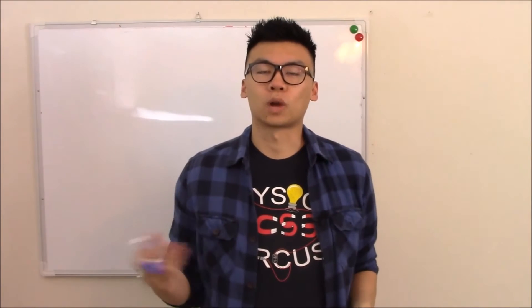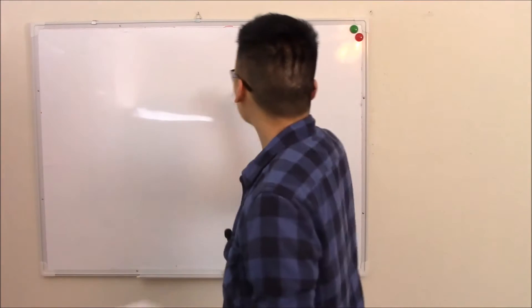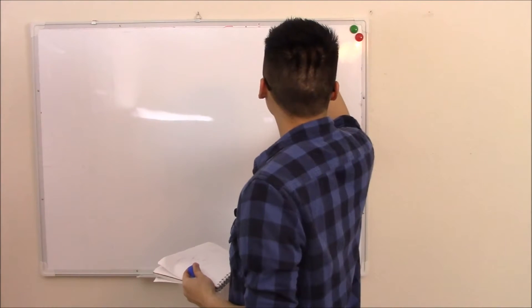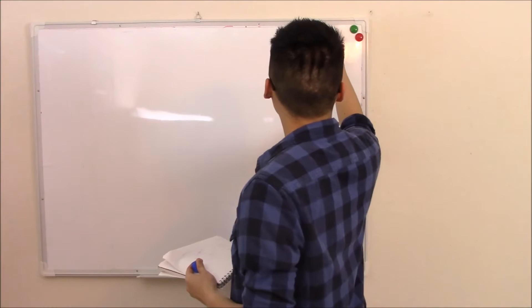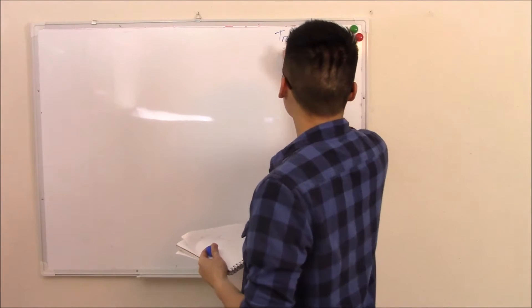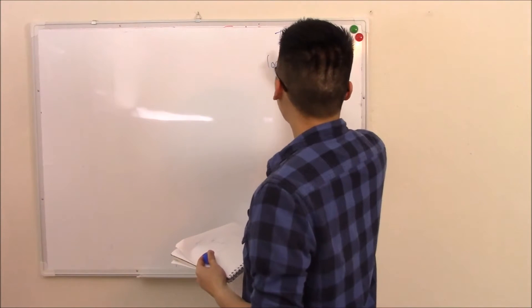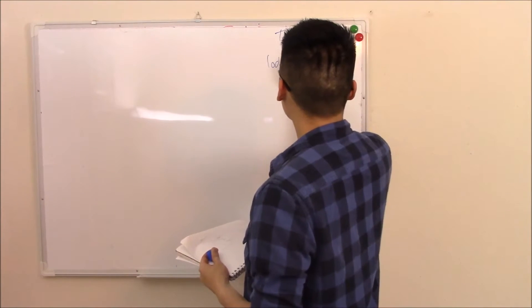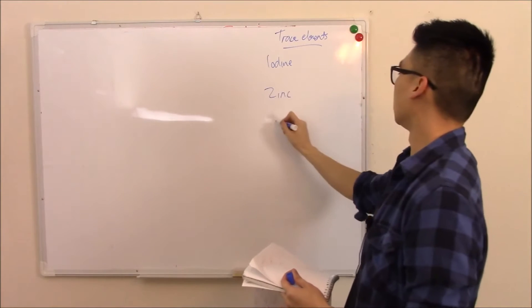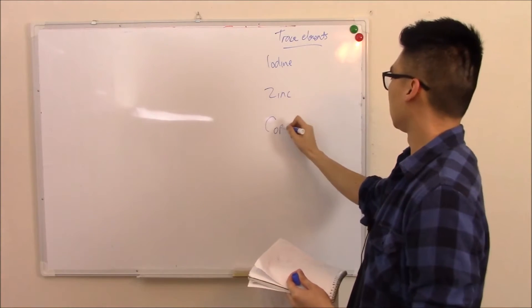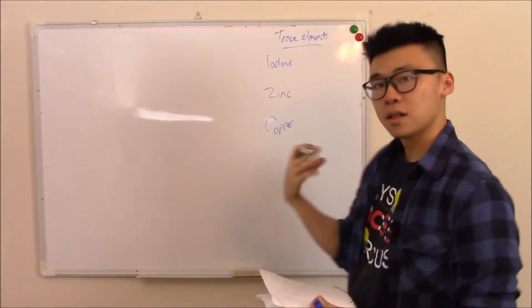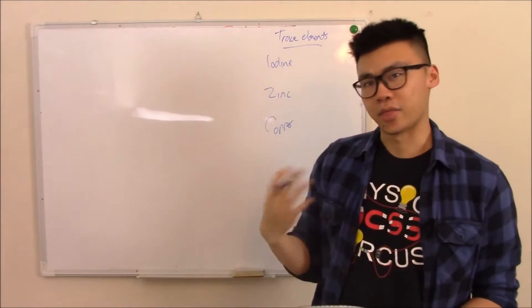This is the last video on nutrition. We're just going to wrap up some loose ends. We'll start with what we call trace elements. Trace elements are going to be things like iodine and zinc, copper, things like that.